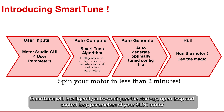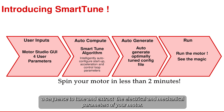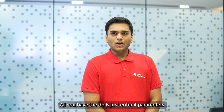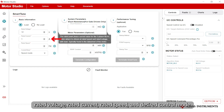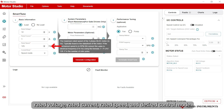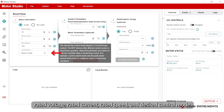SmartTune will intelligently auto-configure startup, open loop, and control loop parameters for your BLDC motors with a sequence to tune and extract the electrical and mechanical parameters of your motor. All you have to do is enter four parameters: rated voltage, rated current, rated speed, and desired control mode.